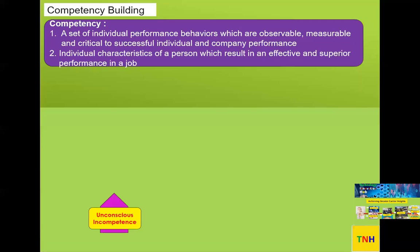Unconscious incompetence means you don't know that you don't know something. A very famous example is riding a bicycle. Until you get on the bicycle and fall off — because you cannot handle the balance — you may think you can ride it because you see others riding. People who have built the competency of riding a bicycle just get on and go. But when you get on and fall, you realize you can't do it. Until that moment, you don't know that you don't have that competency. That is the very first level.